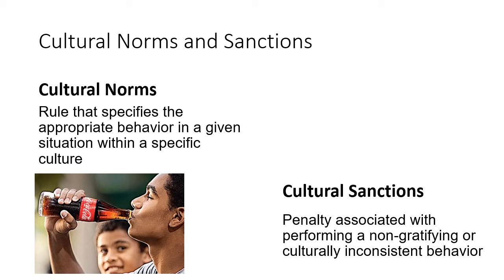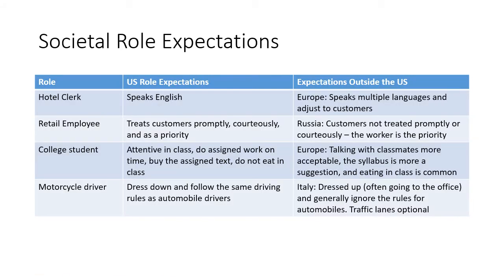We gain insight into our culture and how we're supposed to act through various factors, but these factors differ among cultures. For example, a hotel clerk in the US is expected to speak English and take care of customers, but in Europe they need to speak multiple languages and adjust to each customer. Retail employees in the US are expected to treat customers promptly and courteously, but in Russia the worker is basically the priority over customers. For college students here in the US, we expect you to be attentive in class, do assigned work on time, buy the textbook, and not eat in class.